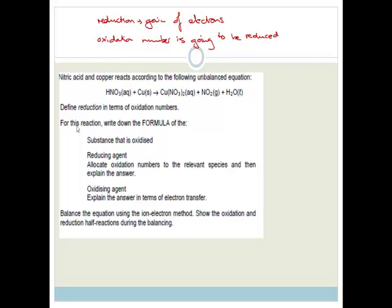Now it says, from this formula, write down the formula of a substance that is oxidized and the reducing agent, and allocate oxidation numbers to the relevant species, then explain the answer. For the oxidizing agent, explain the answer in terms of electron transfer.